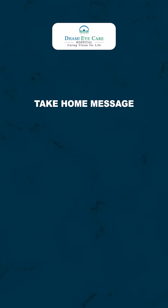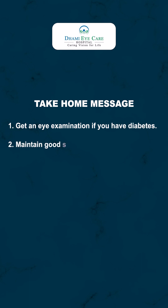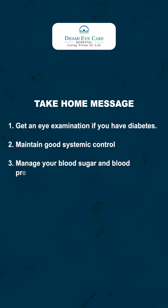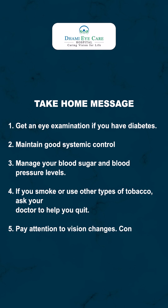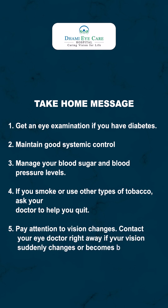Get an eye examination if you have diabetes, maintain good systemic control, and manage your blood sugar and blood pressure levels. If you smoke or use other types of tobacco, ask your doctor to help you quit. Pay attention to vision changes, and contact your eye doctor right away if your vision suddenly changes or becomes blurry, spotty or hazy.